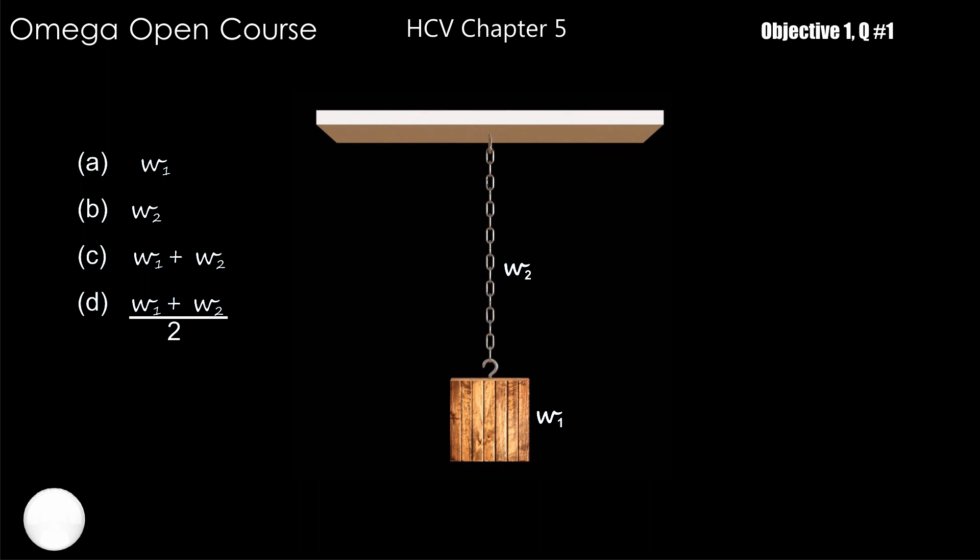While answering such questions, it is always better to take both the body and the chain as a single system. You can take two or more bodies as a single system if their acceleration vectors are exactly equal. Since in this case both the body and the chain are at rest, their acceleration vectors are equal and they can be taken as a single system of weight w1 plus w2.